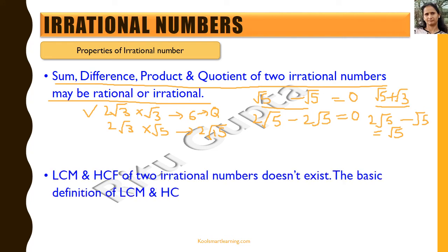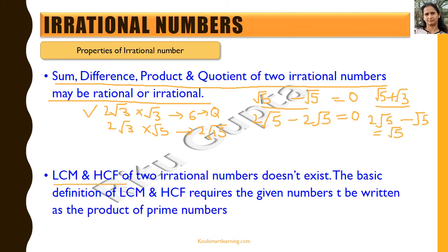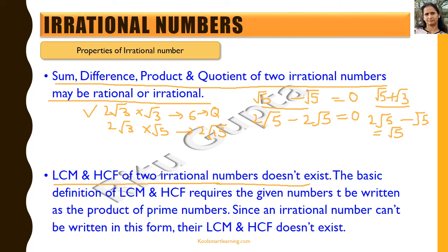Another important point is that the HCF and LCM of two irrational numbers does not exist. This is very important. It does not exist because the basic definition of HCF and LCM requires the given numbers to be written as the product of prime numbers. Since an irrational number cannot be written as a product of prime numbers, their LCM and HCF do not exist.